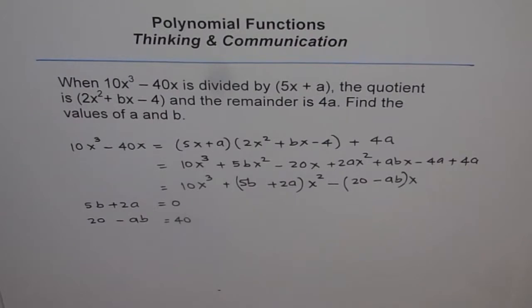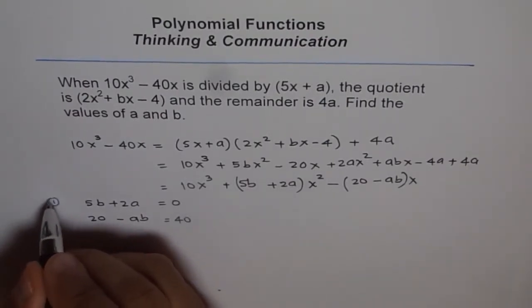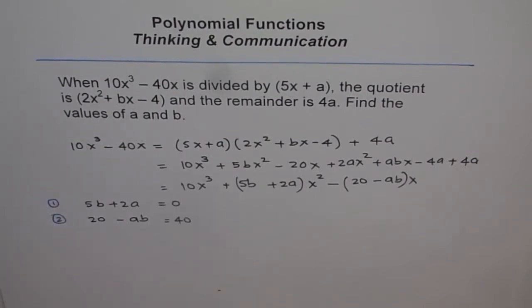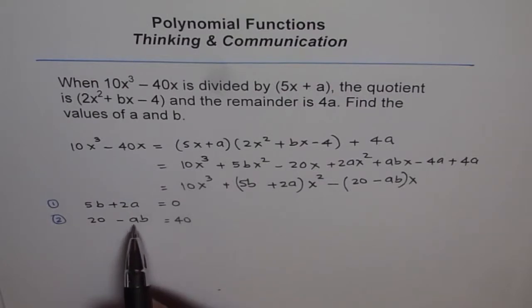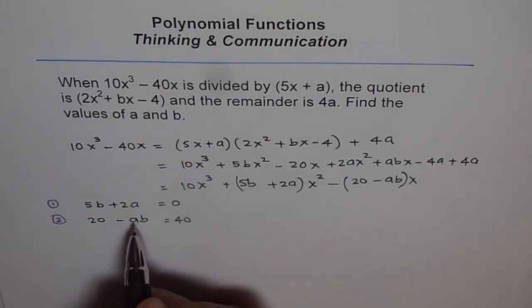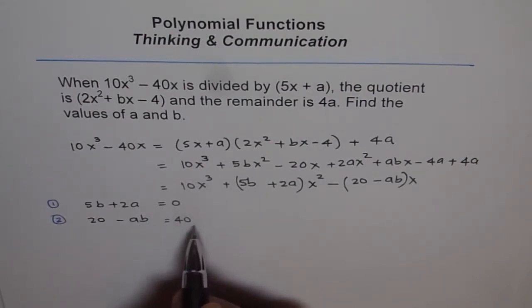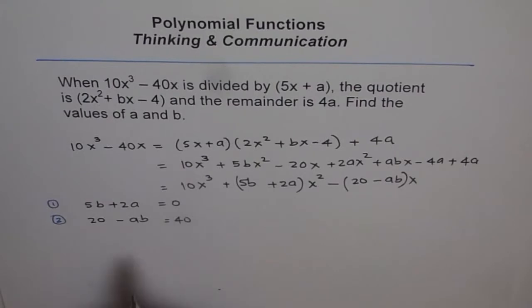So we will try to solve these two equations. Let's number them. This is equation 1 and this is equation 2. Now from equation 2, we can write down what a or b is in terms of one another. We can take ab to this side and write 20 - 40 equals to ab. So 20 - 40 equals to ab, which is minus 20.